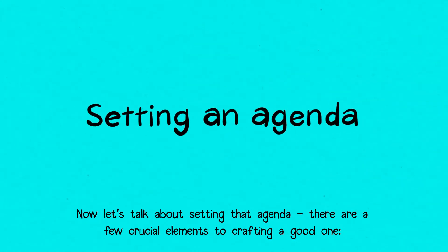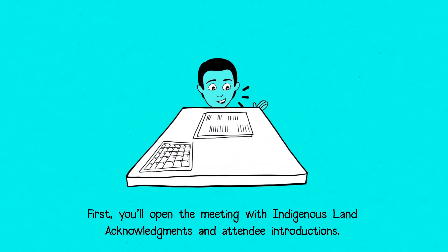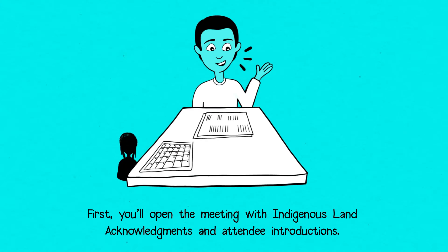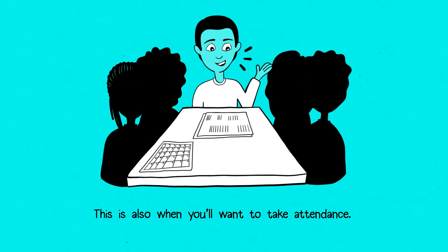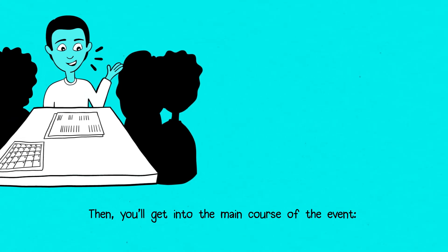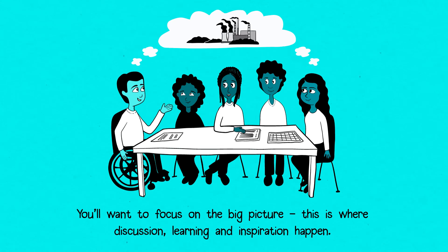Now let's talk about setting that agenda. There are a few crucial elements to crafting a good one. First, you'll open the meeting with Indigenous land acknowledgements and attendee introductions. This is also when you'll want to take attendance. Then you'll get into the main course of the event. You'll want to focus on the big picture — this is where discussion, learning, and inspiration happen.